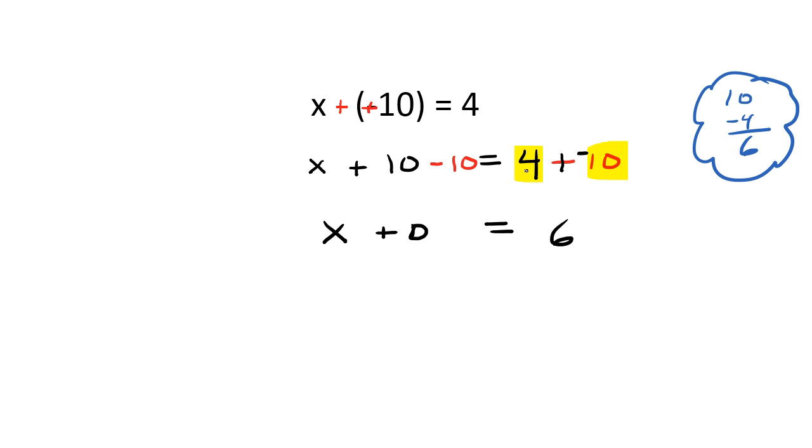So my answer is going to be 6. And then I look to see which number was larger, the 4 or the 10. Since 10 is larger and it's negative, my answer is negative. And I get x equals negative 6.